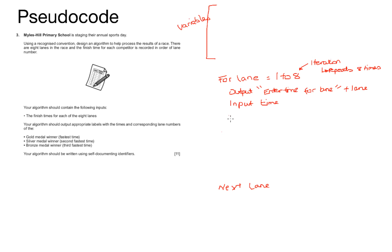In pseudocode, if you're ever trying to compare anything, you would use selection, and selection here means if statements. If the time is less than the gold time, then we need to set that time as the new gold time. However, whatever was in there before needs to be moved down to silver, and whatever was in silver needs to be moved down to bronze.